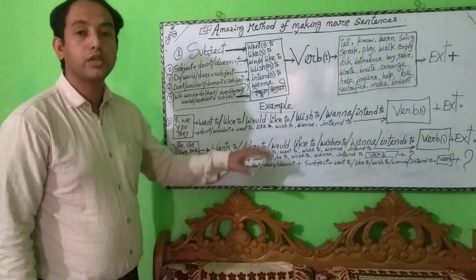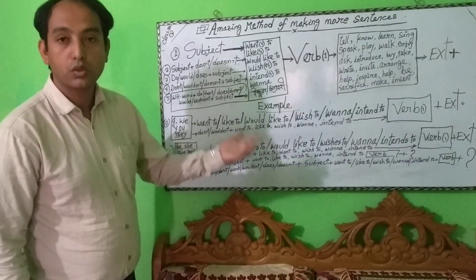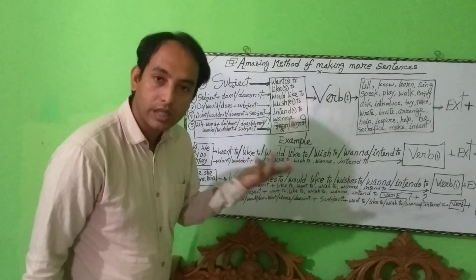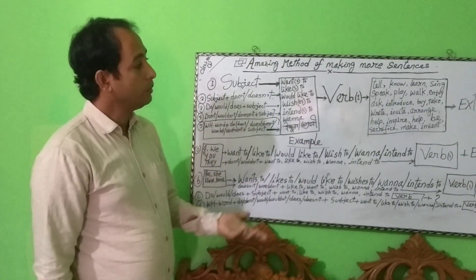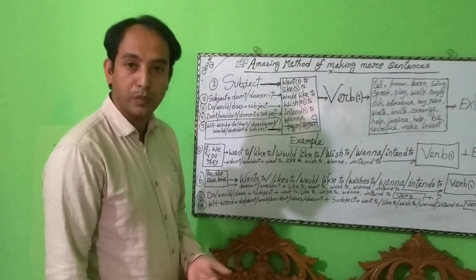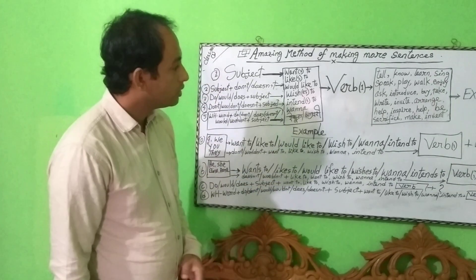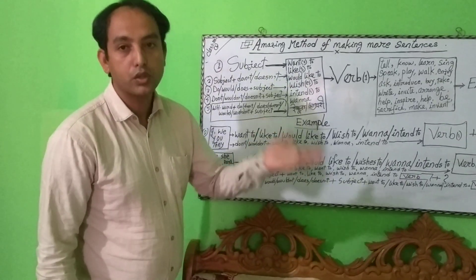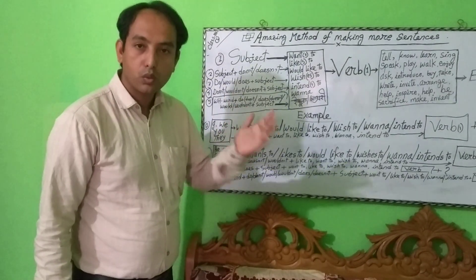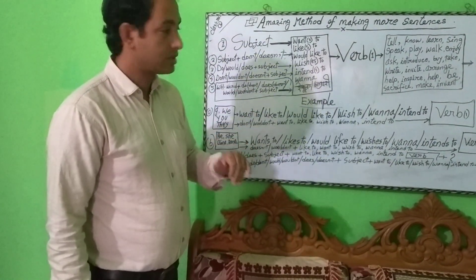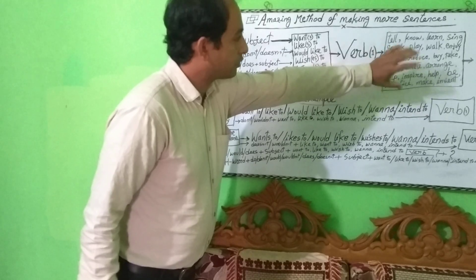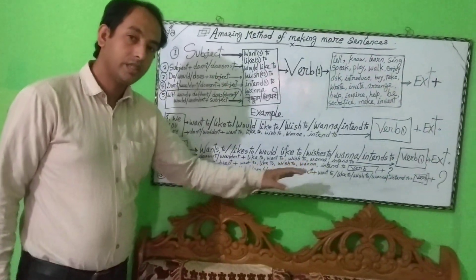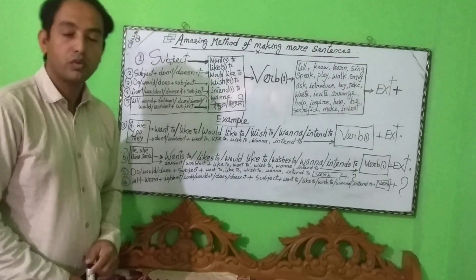For example: What do you like to tell? What do you like to tell us? What do you wish to speak? What do you want to ask? What would you like to speak? What would you like to say? From the box, you can take any verb, then it will be easy for you to make a fruitful sentence.